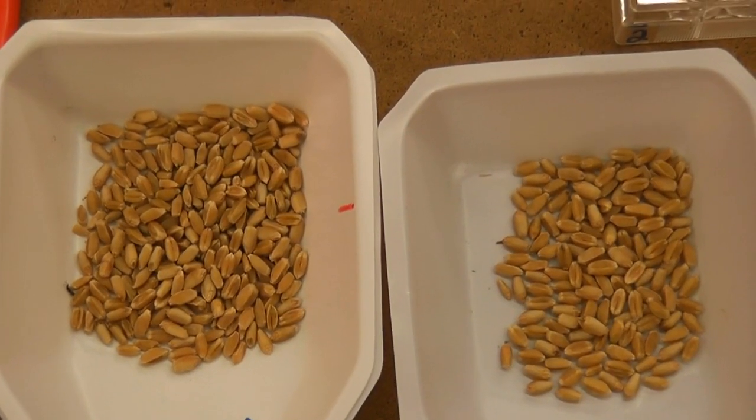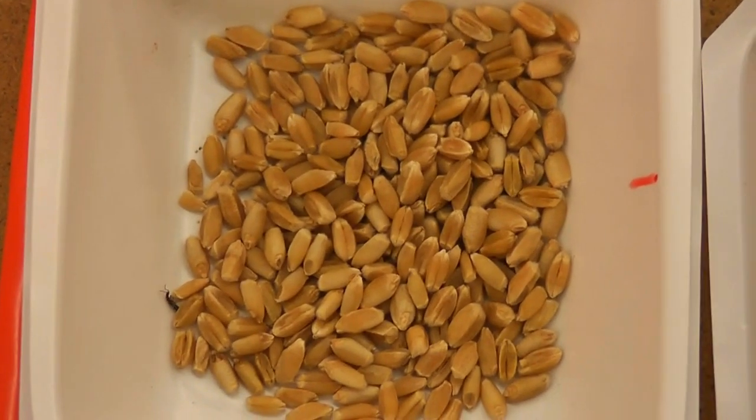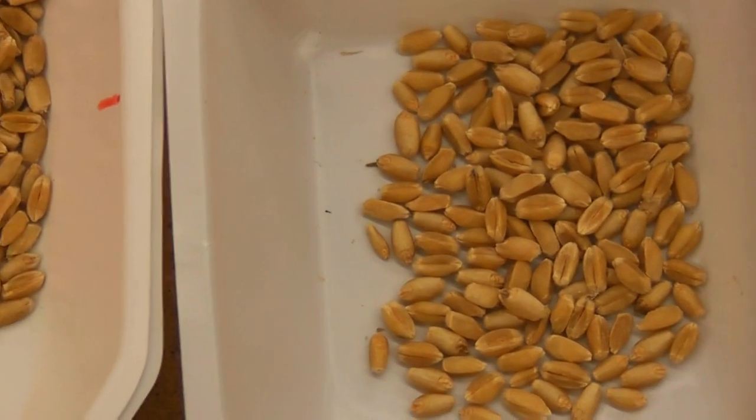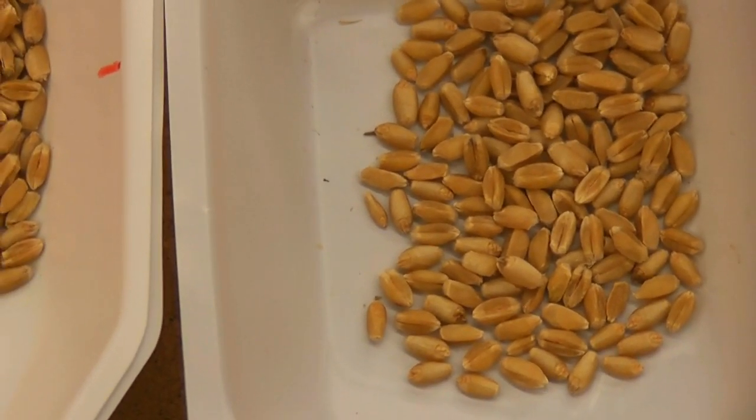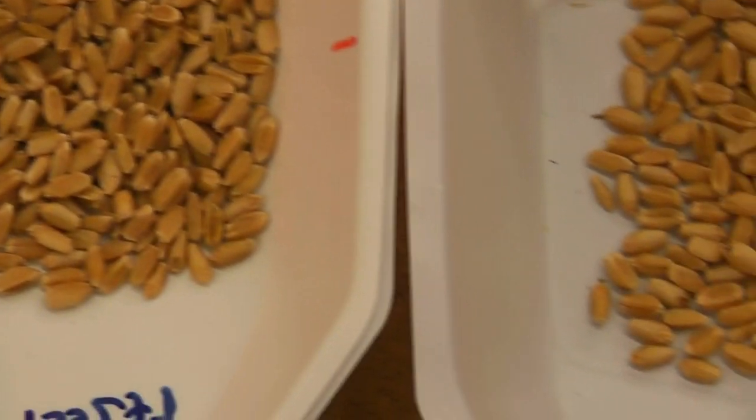Okay. So there's some of the sorted kernels. There's the more narrow kernels right there. And there's our more roundish kernels there. They're all from the same wheat variety, this white wheat.